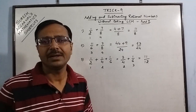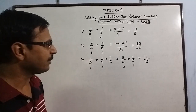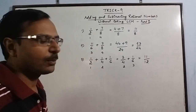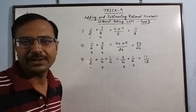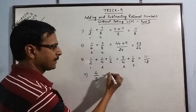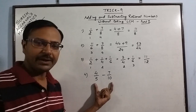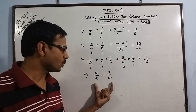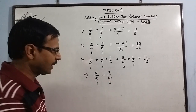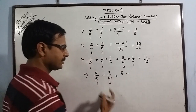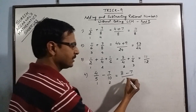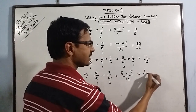Instead of taking LCM in the traditional manner, we solve these problems just by cancelling the common factor. Now let us take one problem of subtraction involving a common factor in the denominators: 4/5 minus 7/10. These two denominators have a common factor of 5 — 5 ones are 5 and 5 twos are 10. So: 4 times 2 is 8, minus 7 times 1 is 7. The denominator is 5 times 2 or 10 times 1, both giving 10. So the answer is 1/10.